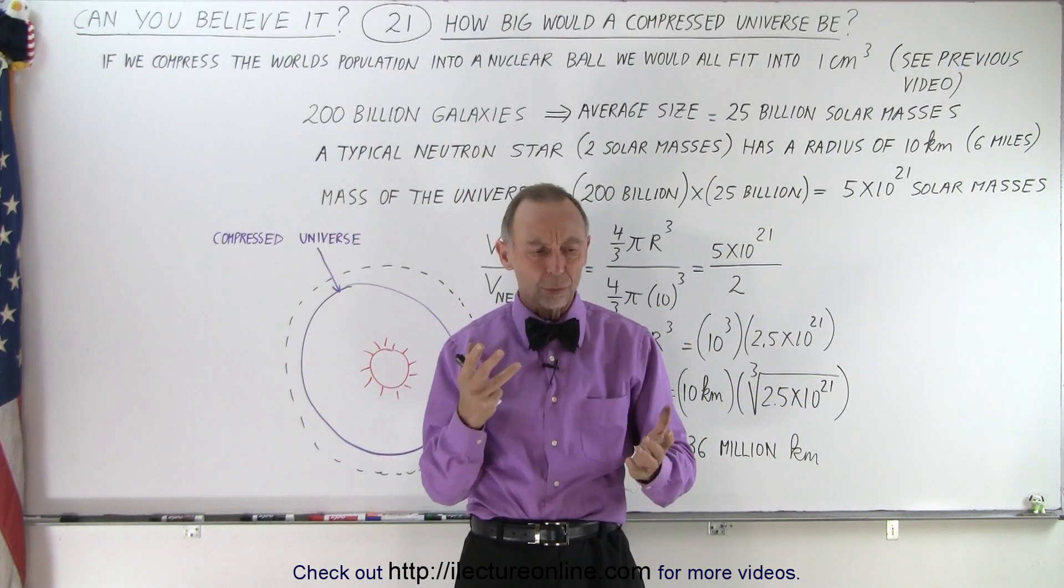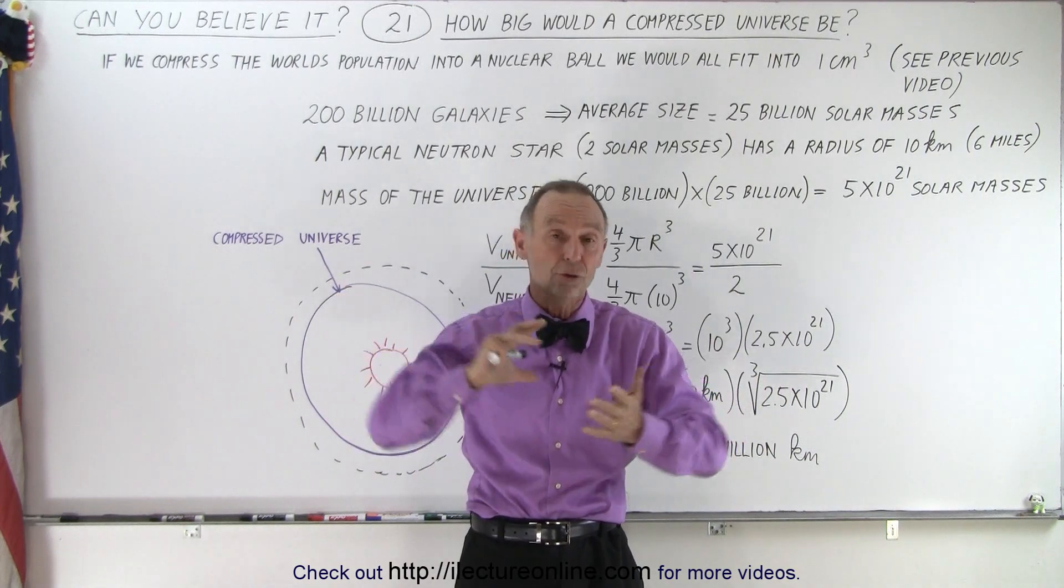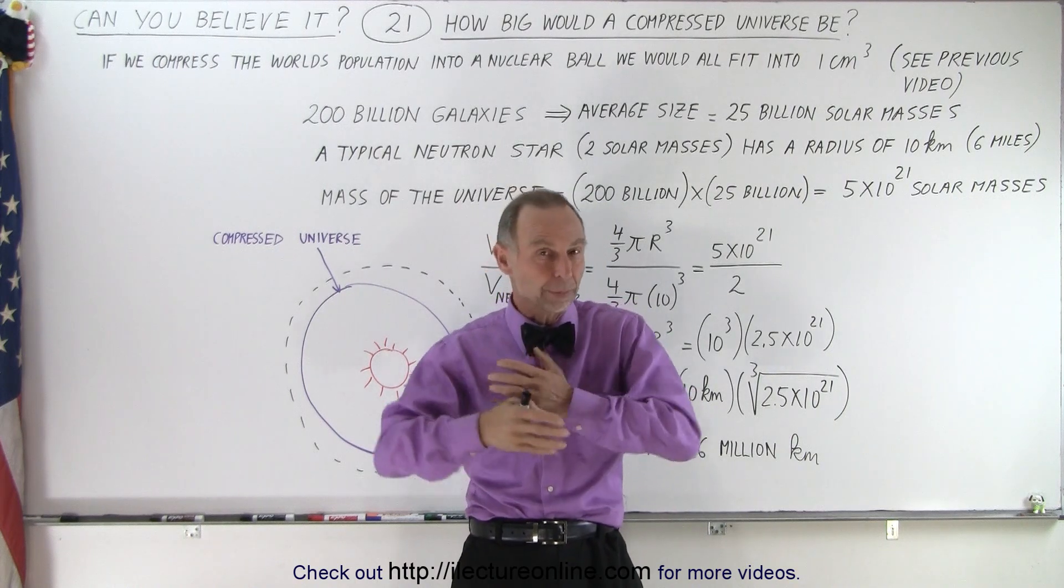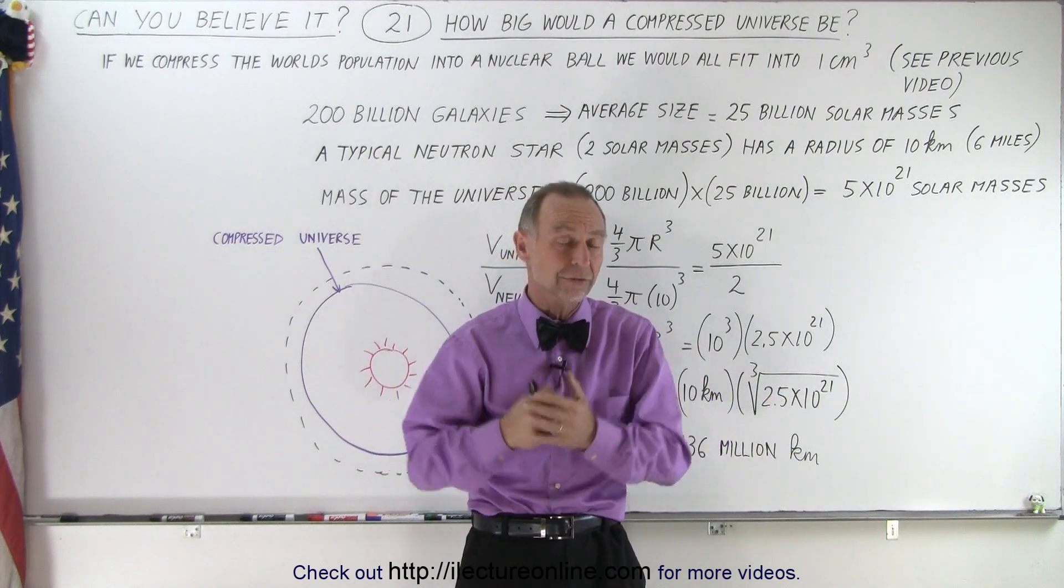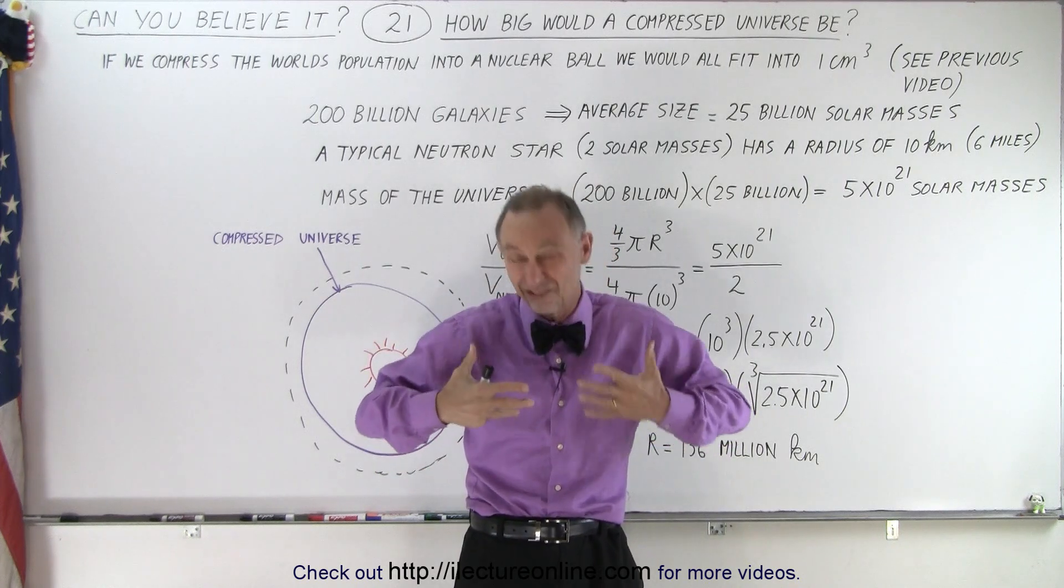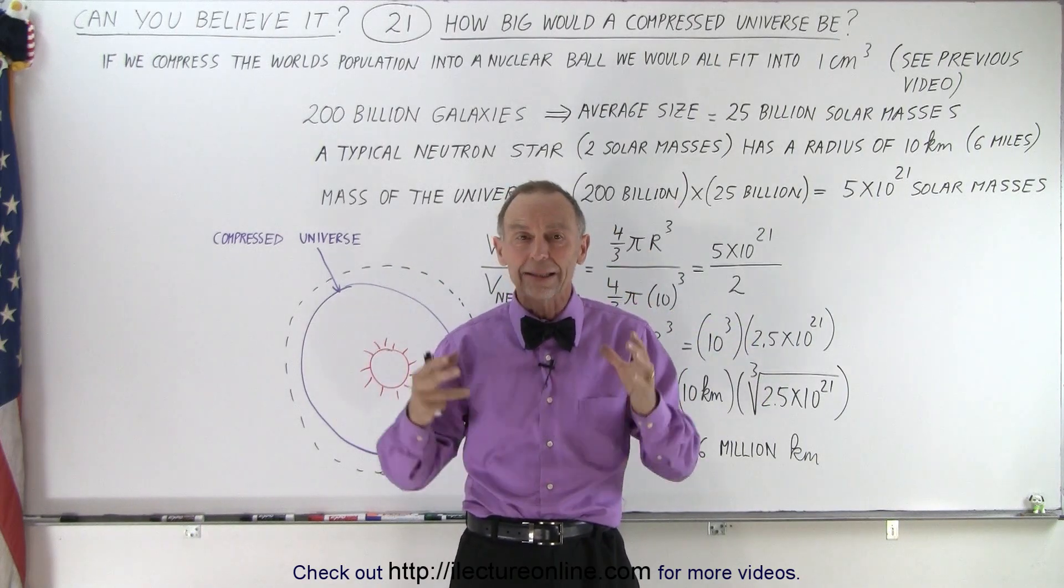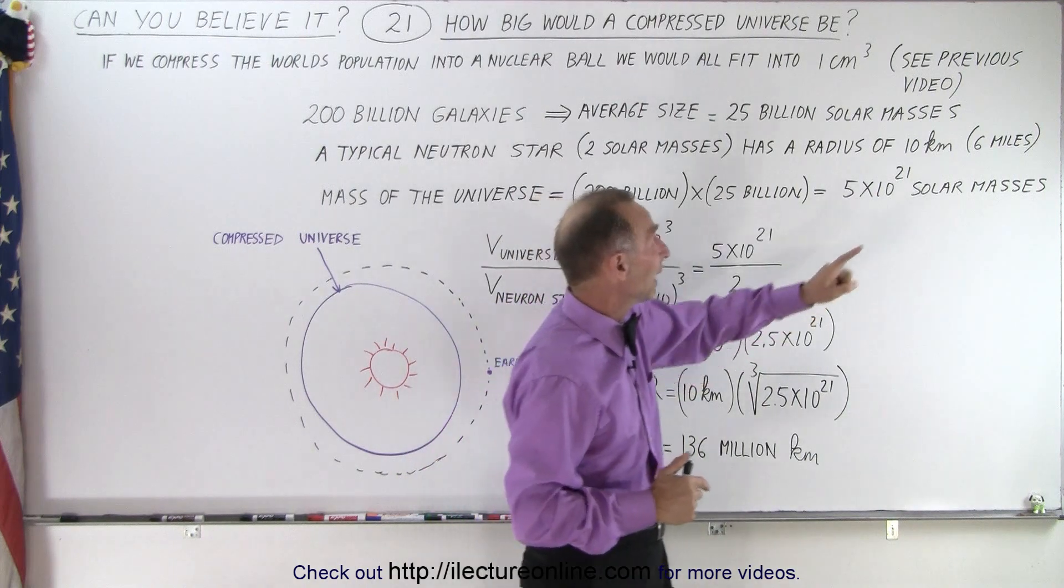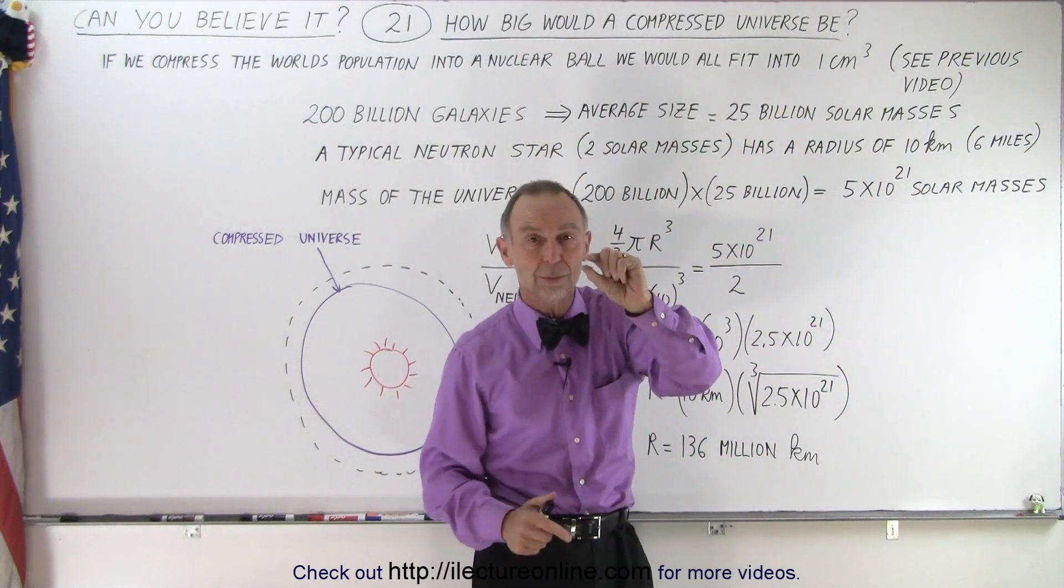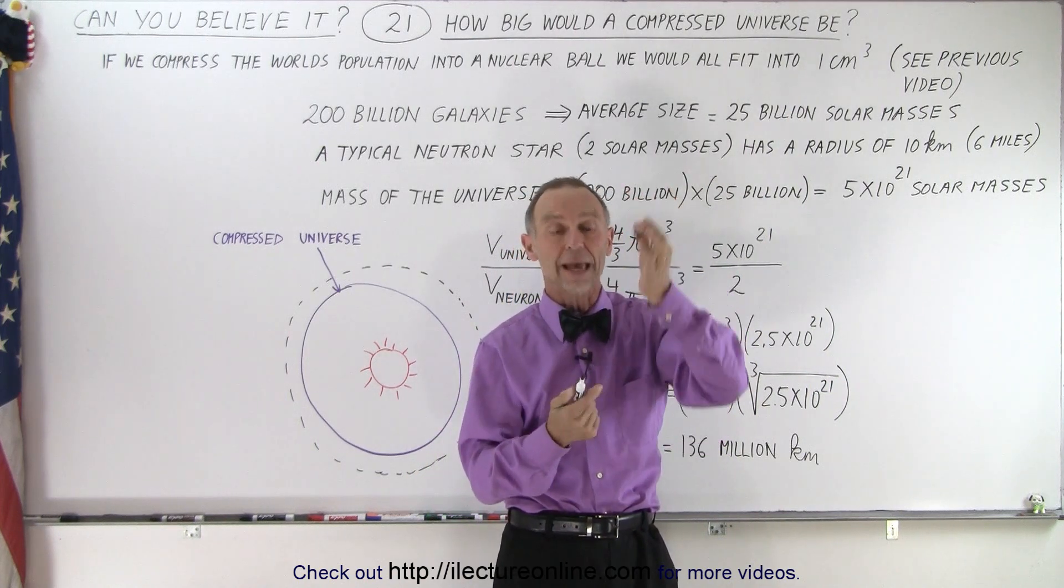We said what if we could compress all that space between the nuclei and compress nucleus against nucleus, how big would matter be? As an example, if we took all the people of the world—almost 8 billion of us—and compressed everybody down to nucleus against nucleus, the entire world population could fit into a single cubic centimeter, no bigger than the size of this pen cap.